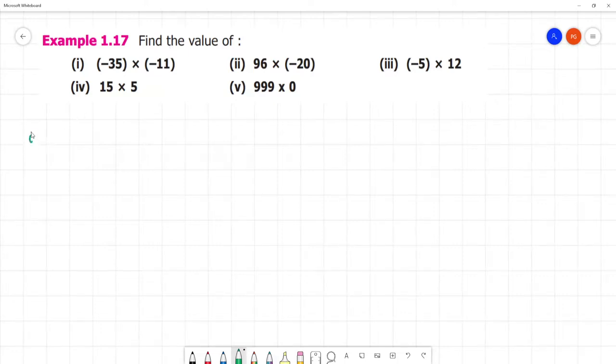The value of the first one is -35 × -11. First, minus into minus is plus. Next is 35 multiplied by 11. So this is 5, 8, 3. Answer is 385.